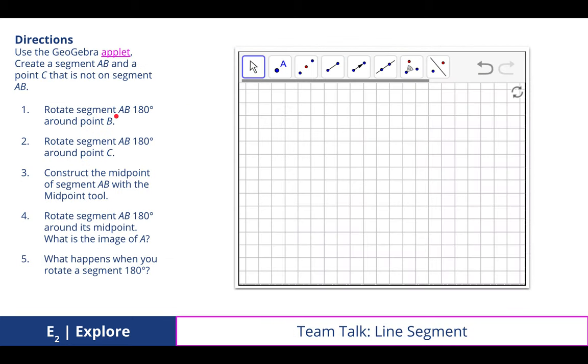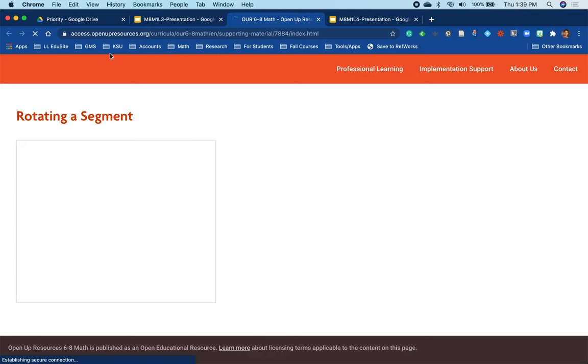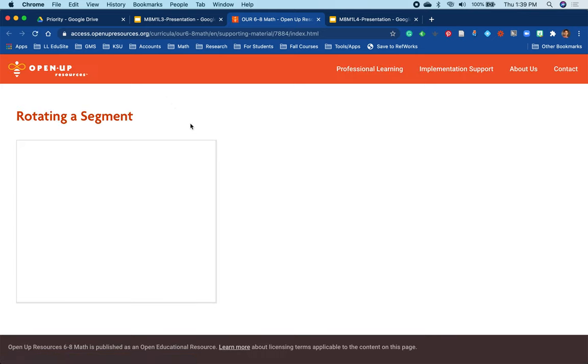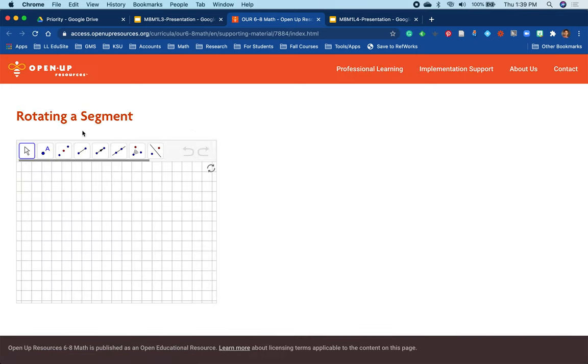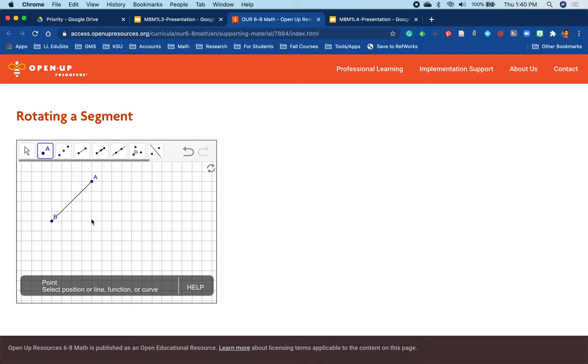We then experimented with GeoGebra's applet in creating line segments and rotating them to see what would happen. I'm going to do this with you, as this leads into the formal notes for today. So when we rotate a line segment, we can create that segment selecting two points, and we can choose a third point not on that line segment.